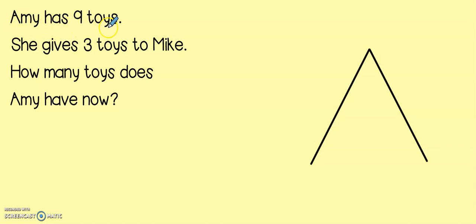Amy has nine toys. She gives three toys to Mike. How many toys does Amy have now? Let's think about this. So, using my mathematical thinking, Amy has nine toys. That's how many toys Amy started with. She gives three toys to Mike. So if she's giving those toys to someone else, do you think that we should add nine plus three or do you think that we should subtract nine minus three?